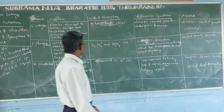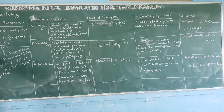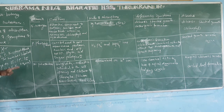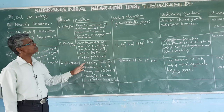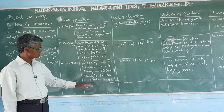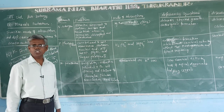So now, if you look at the macronutrients — their function, absorption, deficiency symptoms and diseases — if you make a table column method, see the board. I will not report from the book in paragraph method; only use the table column method. That is the continuous part and we will see the next spell. Thank you.